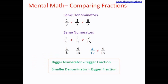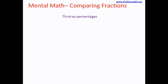When we don't have the same numerators or the same denominators, we can use a method called 'think as percentages' — we look at the fraction and think of it as a percentage. Let's take an example: 4 over 7 and 5 over 13. If you look at 4 over 7, the denominator is 7. Half of 7 is 3.5, so if the numerator were 3.5, the fraction would be exactly 50 percent.